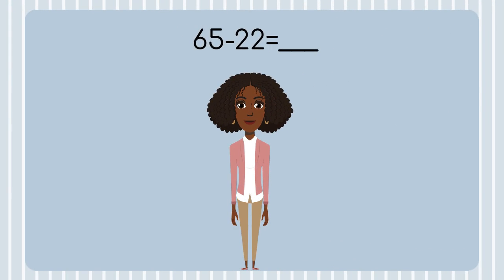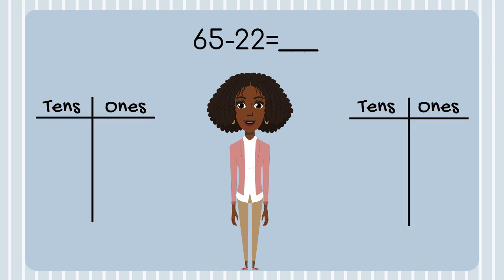Let's try another one. This time, I'll need some help. Here is our equation: 65 minus 22. I'll create our two place value charts. First, let's put our numbers into our place value chart. Next, we need to model our equation. Which number will we model with place value blocks? Remember, we want to model our total. 65 is our total. Let's model 65 in our place value chart.